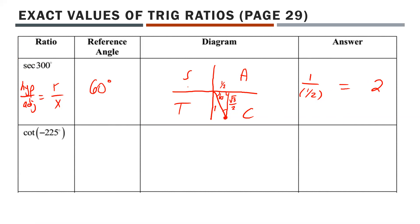Another way to check: if you're careful setting up your diagram, you can track whether your x and y values are positive or negative. X is positive 1/2 here, while Y would be negative √3/2 since we're in quadrant 4. Since we didn't use the Y value for this problem, it didn't matter in the end.